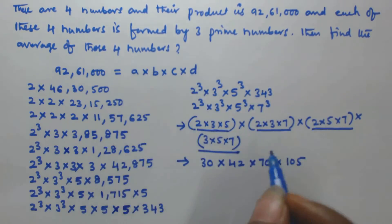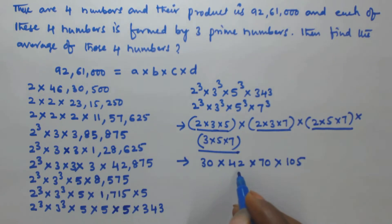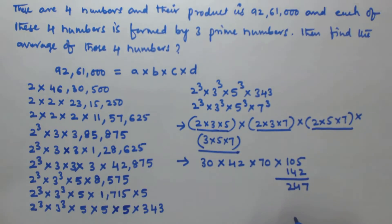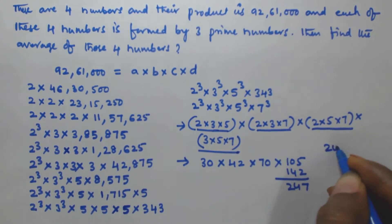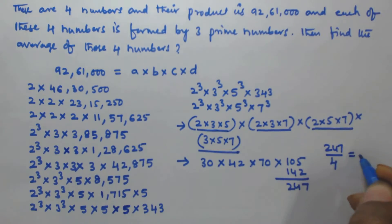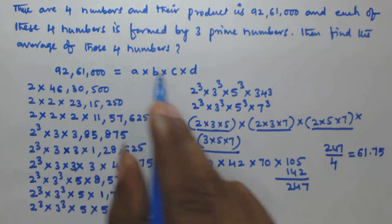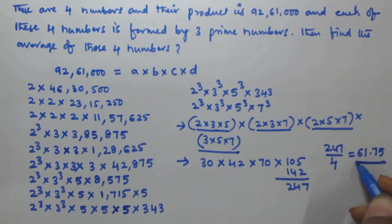Now we find the average of these four numbers. Adding them: 30 + 42 = 72, 72 + 70 = 142, 142 + 105 = 247. There are 4 numbers, so the average is 247 ÷ 4 = 61.75. The average of those four numbers is 61.75.